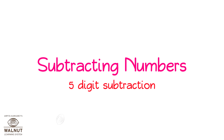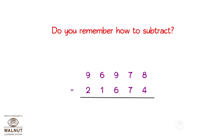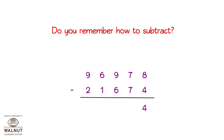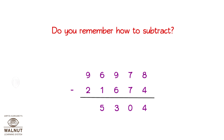Subtracting numbers: 5-digit subtraction. Do you remember how to subtract 2 numbers? The method doesn't change even if the digits in the number are more. We start by subtracting the digits in the lowest place. That gives us our final answer.